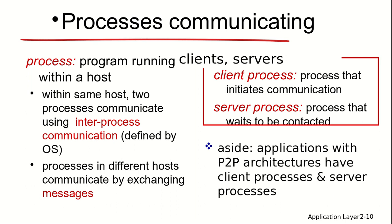Processes can run on different hosts and communicate by exchanging messages over the network. The client process initiates the communication; the server process waits to be contacted. Applications using peer-to-peer architecture run both client and server processes in parallel — the peer can behave as both.